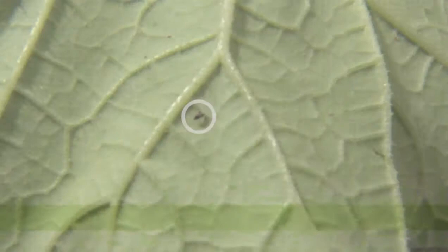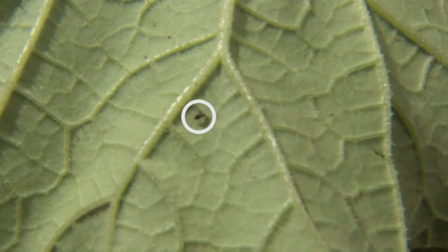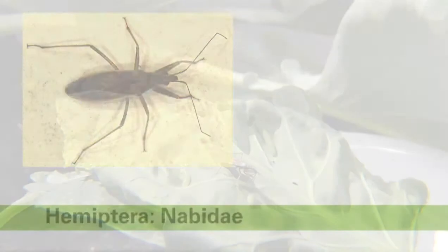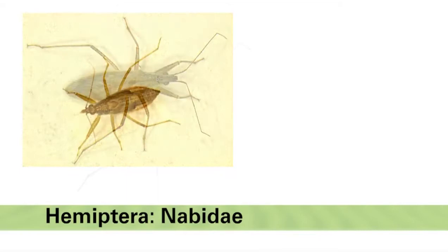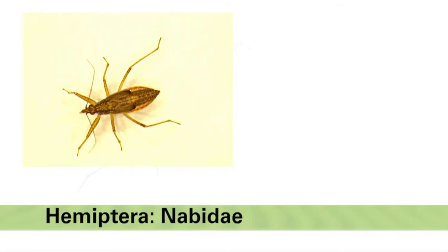Although they are hard to spot, minute pirate bugs are very common and are important predators in the majority of vegetable crops. Damsel bugs in the family Nabidae are a slightly larger common true bug predator in vegetable crops. They are gray to brown in color and a half-inch in length. Adults are long and slender with enlarged front legs. The nymphs look very similar to the adults, but with wing pads instead of fully formed wings. Their diet includes insect eggs, small caterpillars, beetle larvae, mites, thrips, and aphids.